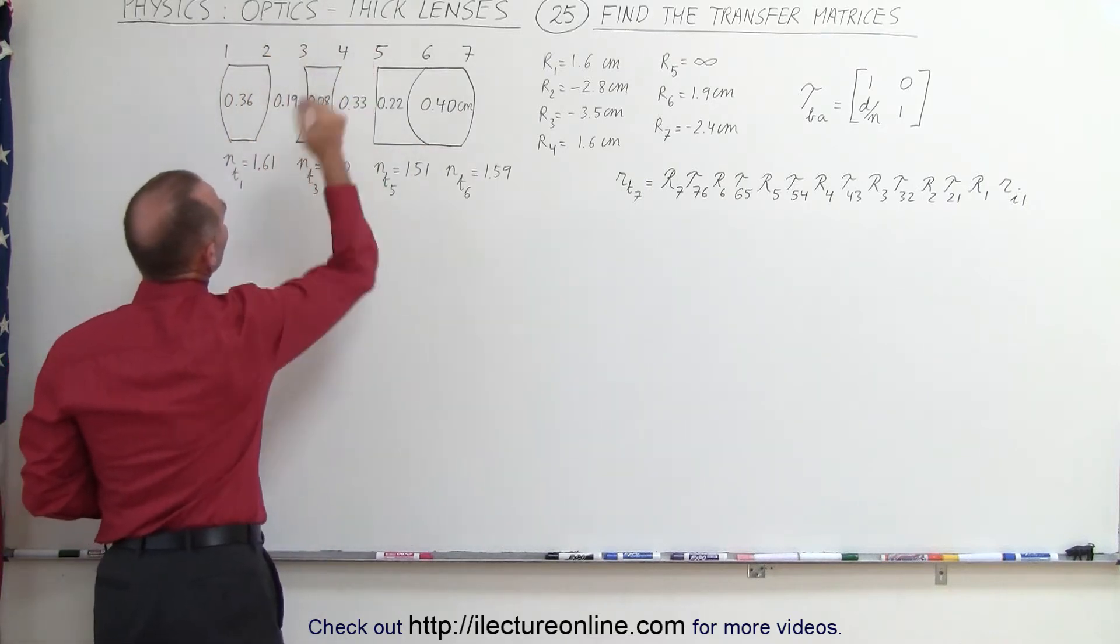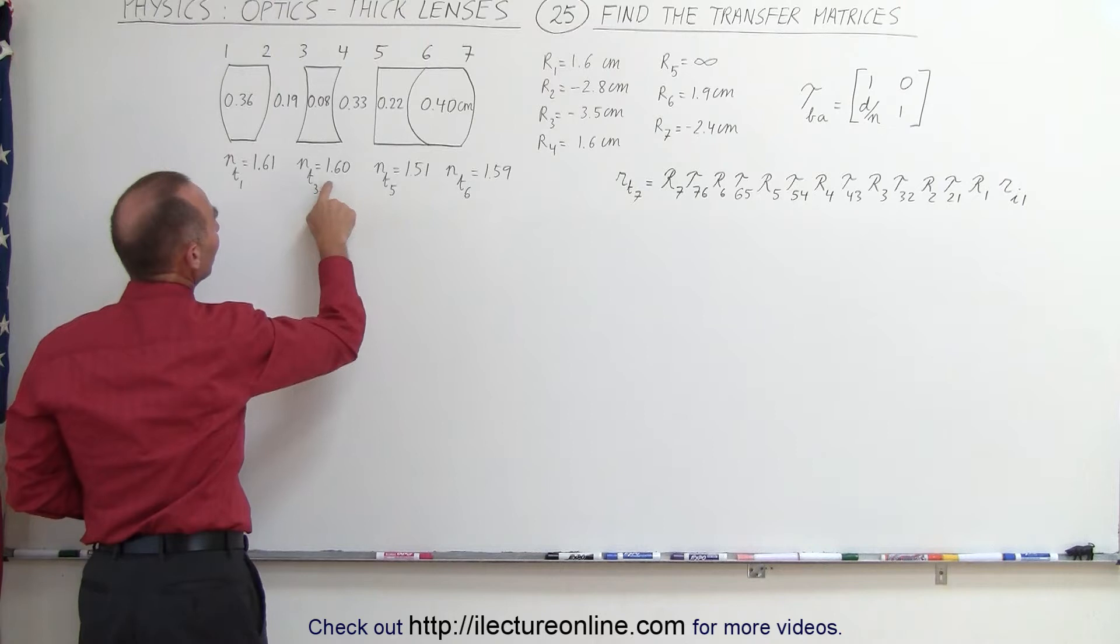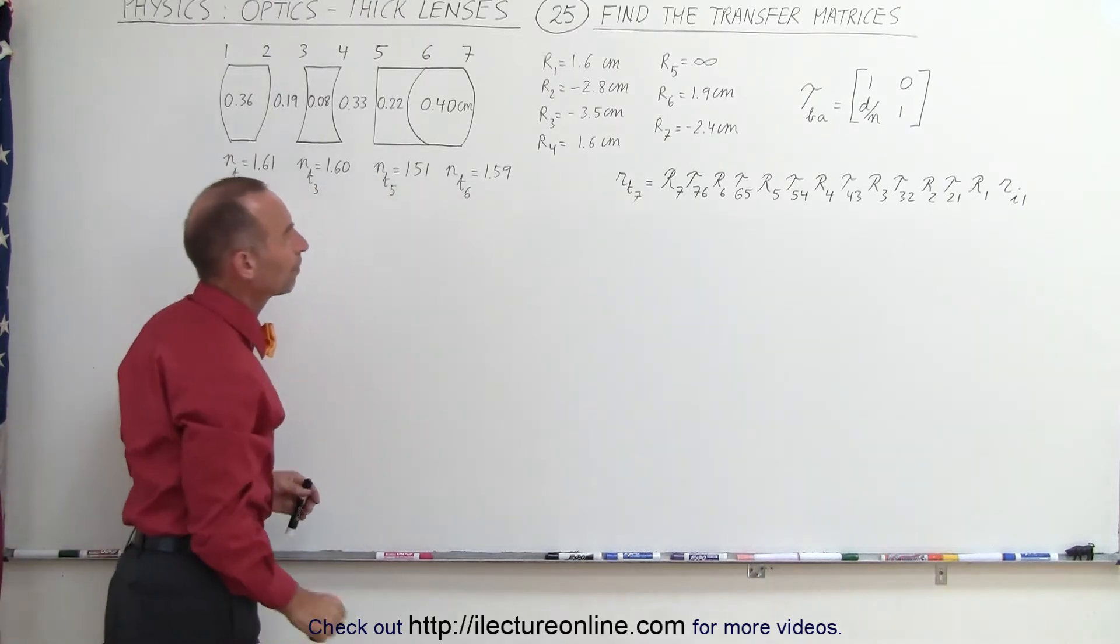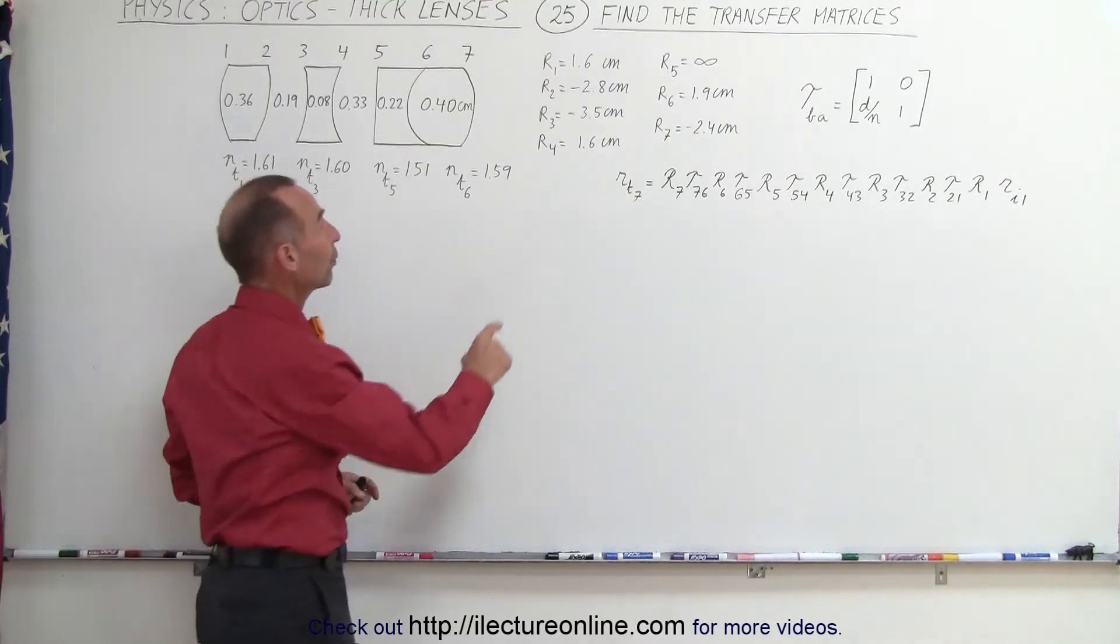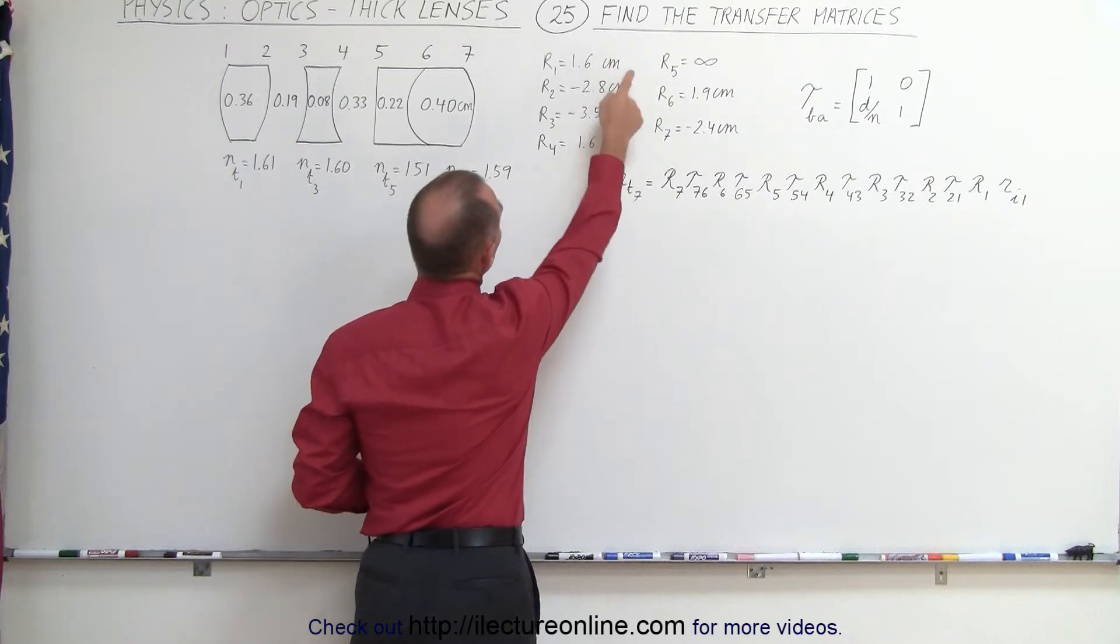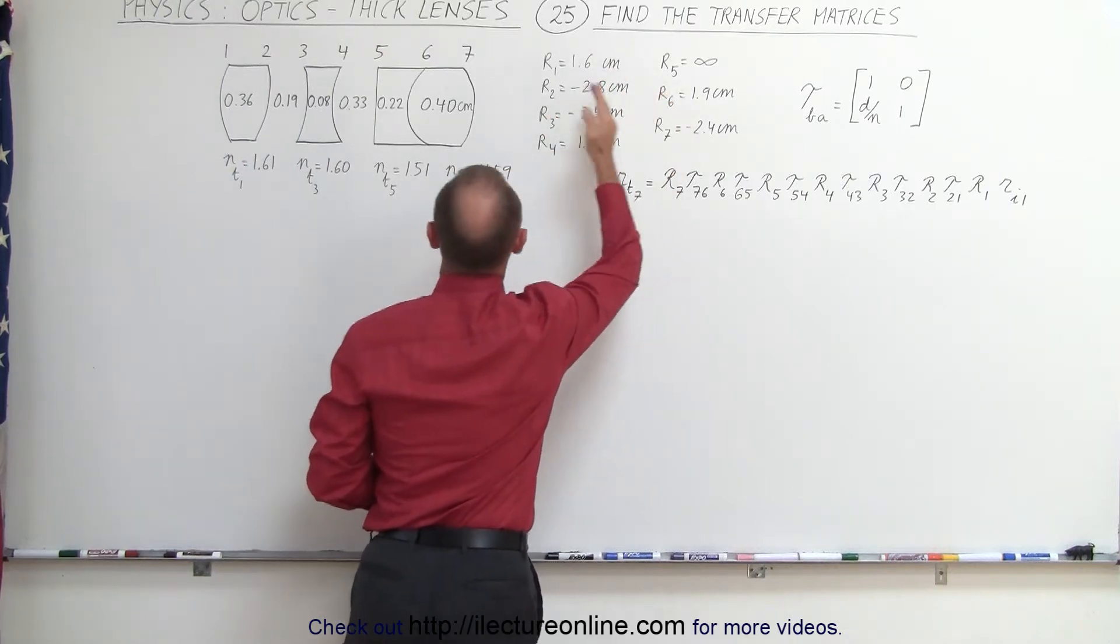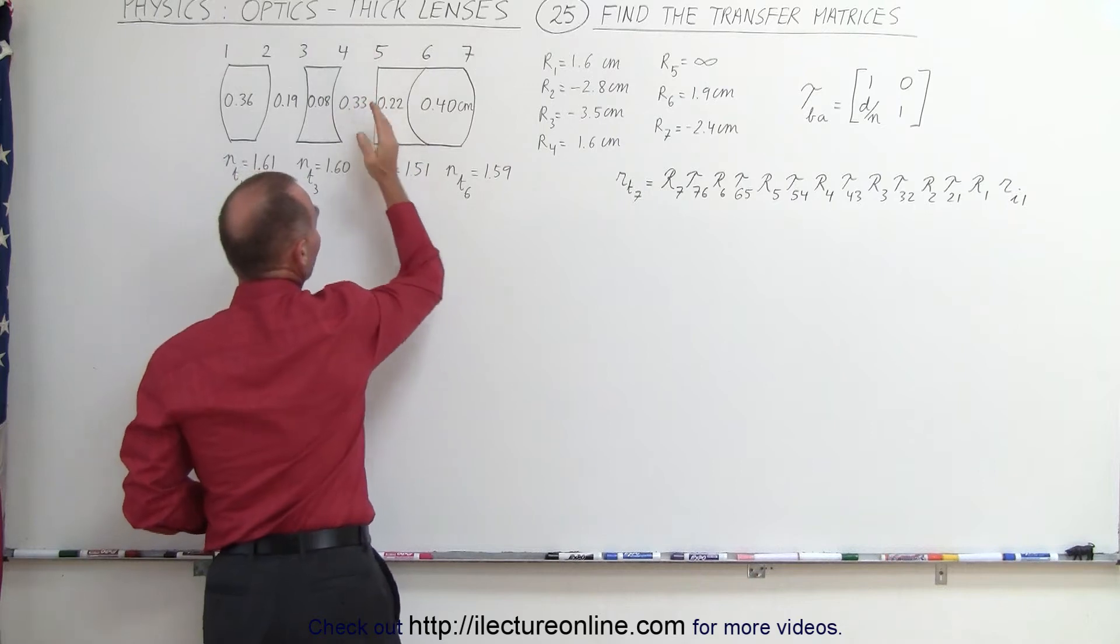There are a total of seven boundaries. And notice we have the indices of refraction of the four lenses. We also have the radius of curvature of the seven boundaries listed right here. And notice, of course, for boundary number 5, since it's a flat surface, the radius of curvature in that case would be infinite.